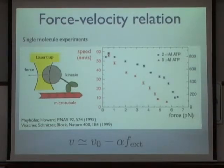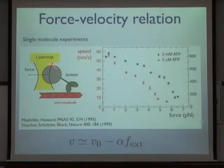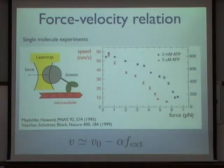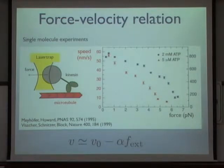Here is an example of experimental data taken for a single kinesin molecule moving along a microtubule. This is done by attaching these molecules to small latex beads, which are then manipulated in the microscope in an optical trap. By observing the speed of bead motion one learns about the velocity of the motor, and by applying micro-manipulation using a focused laser beam — which attracts the bead into the laser focus — one can exert calibrated forces. With a feedback mechanism, one can keep the force constant and measure speed as a function of force.